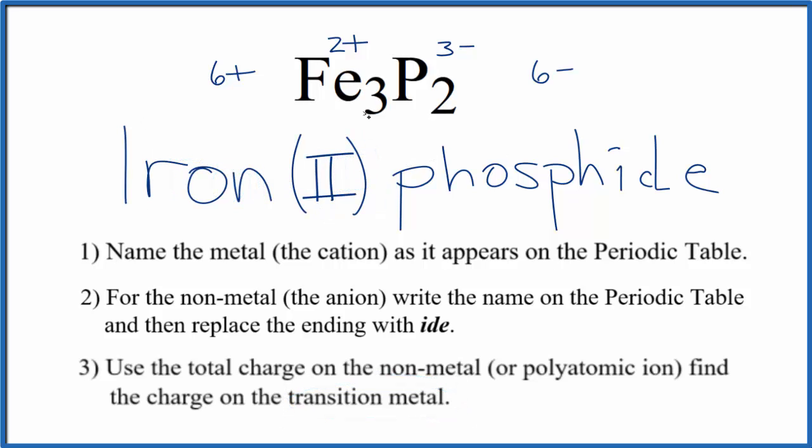So the name for Fe3P2 is iron two phosphide, and the two is because of this two here on the irons.